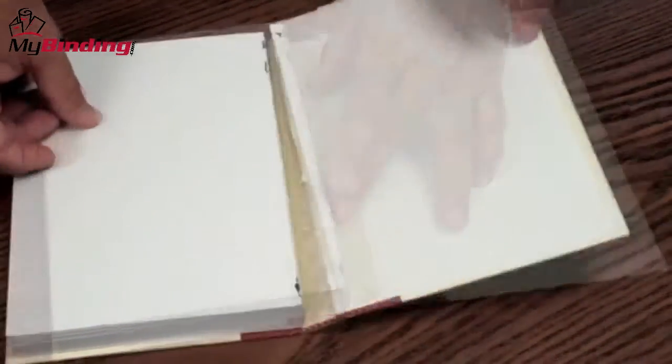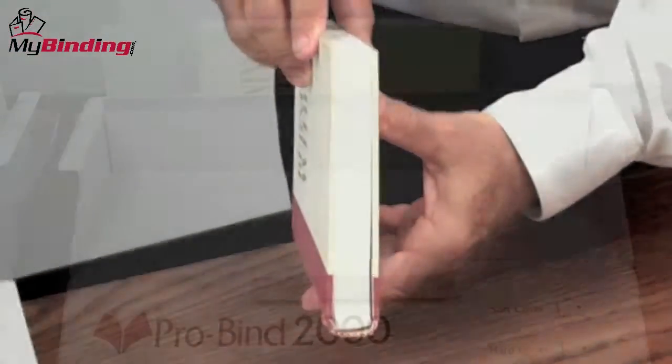When the adhesive warms up, it expands. So to keep the glue from spilling out of the book and into the machine, cutting it a little bit short is wise.